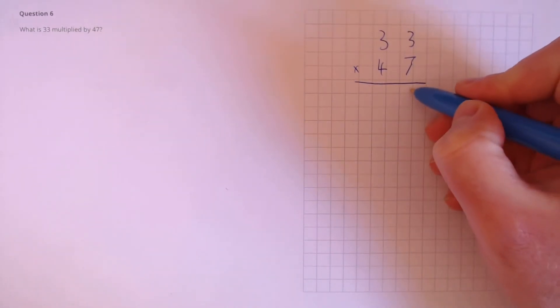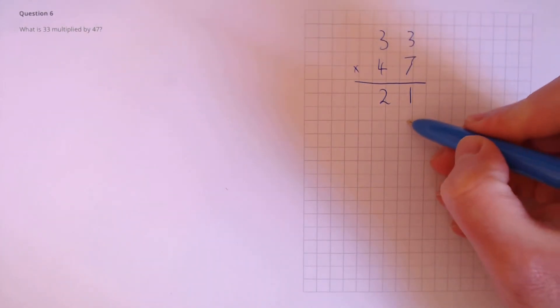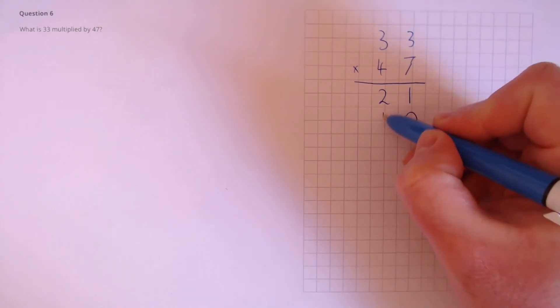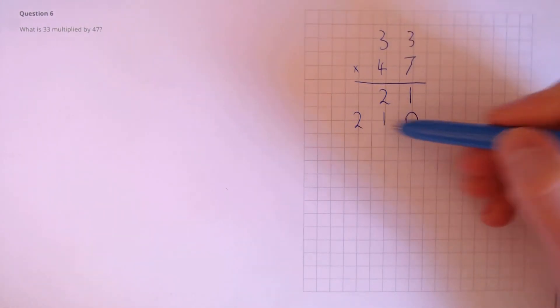3 times 7, that's 21. Next, let's multiply this tens column by the units column here. Because we're multiplying our tens column by our units column, we need to stick in a 0 first to notify that this is a 10. So, 3 times 7, that's 21 again. Like we said, this was a tens column. That's 30 times 7, which is actually 210.